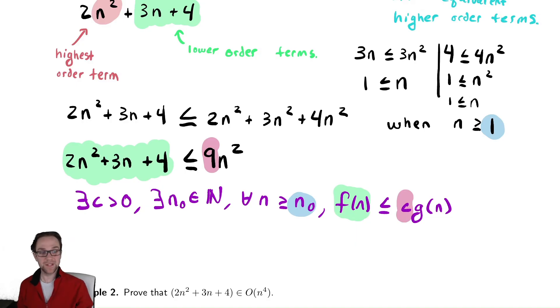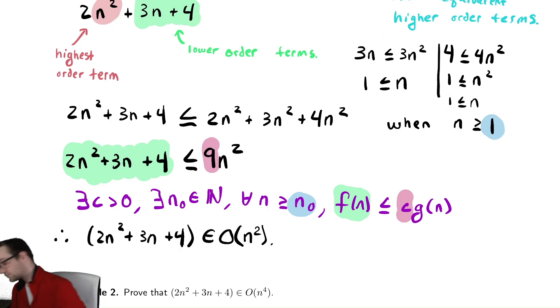So we've shown that we satisfied the definition. We found c and we found n₀ and because of the justifications we made with the inequalities, we know it's true for all n greater than or equal to that n₀. So what we've done here is enough to show that therefore the given function 2n² + 3n + 4 is in Big O of n². Because what we did was mathematically justified steps and we found the constants that we needed to make that claim.